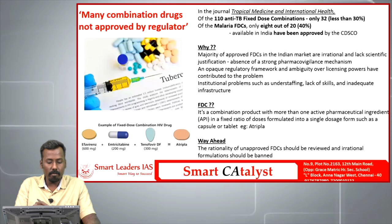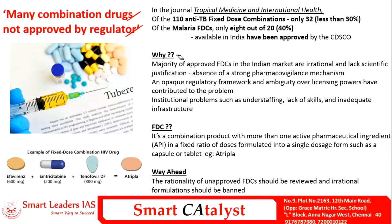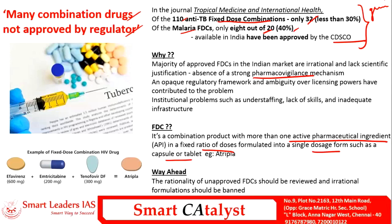The next article is about combination drugs not being approved by regulators. A recent study indicates that out of 110 anti-TB fixed dose combinations, only 32 have been approved by CDSCO. For malaria, only 8 out of 20 FDCs have been approved. This shows a grim picture of pharmacovigilance in India. A fixed dose combination is a combination product of more than one active pharmaceutical ingredient in a fixed ratio of doses formulated into a single dosage form such as a capsule or tablet. FDCs become especially important in larger health problems like TB.